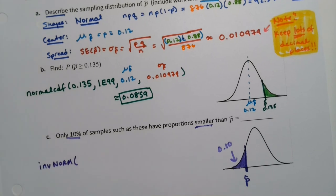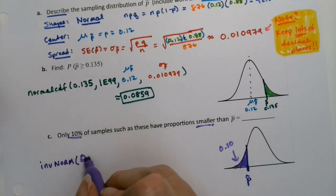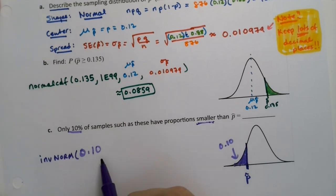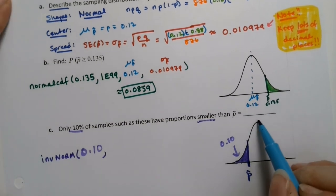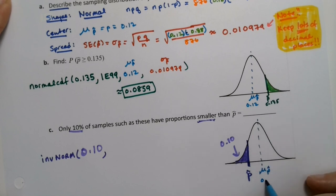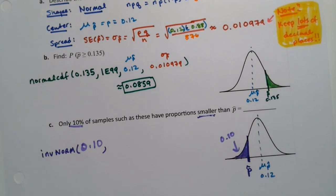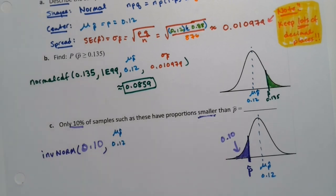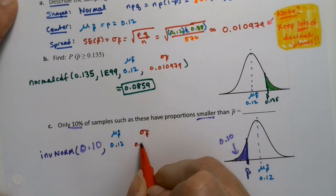So this will be inverse norm. My area is 0.10. Oops, but I forgot to put my mean in. My mean is right here—it's the mean of the p-hats, which is 0.12. So 0.12, that's the mean of the p-hats. And then the sigma p-hat is the same as it was before. I have to use the 0.010979.